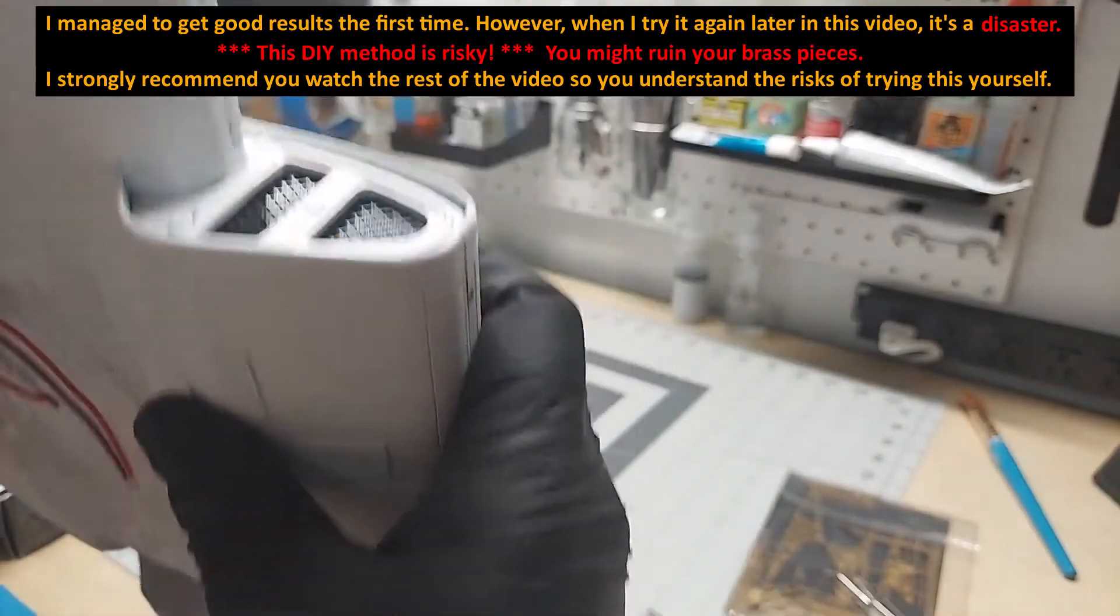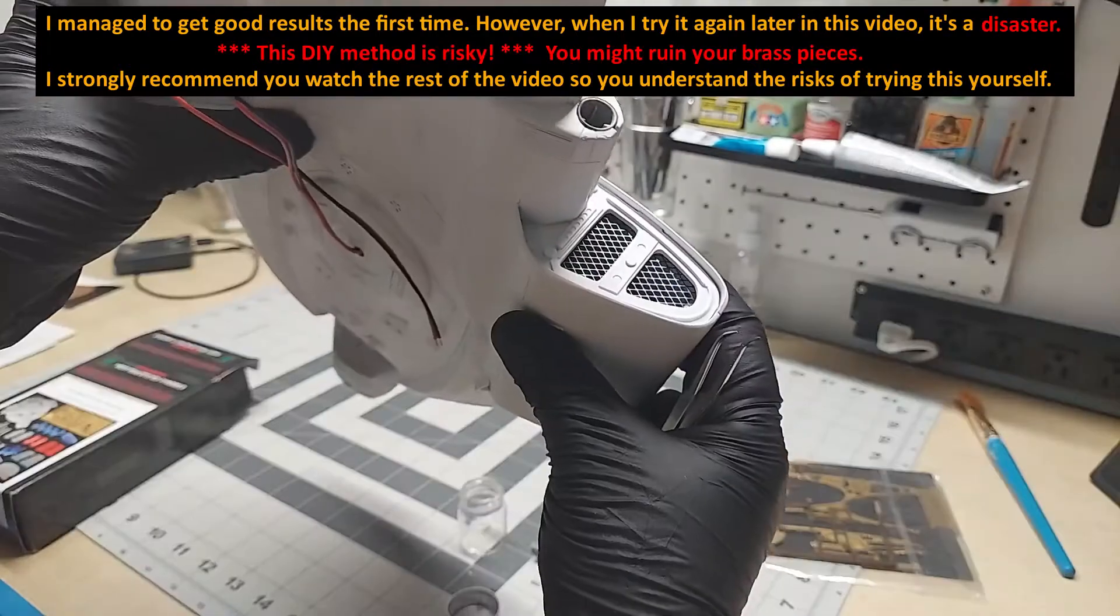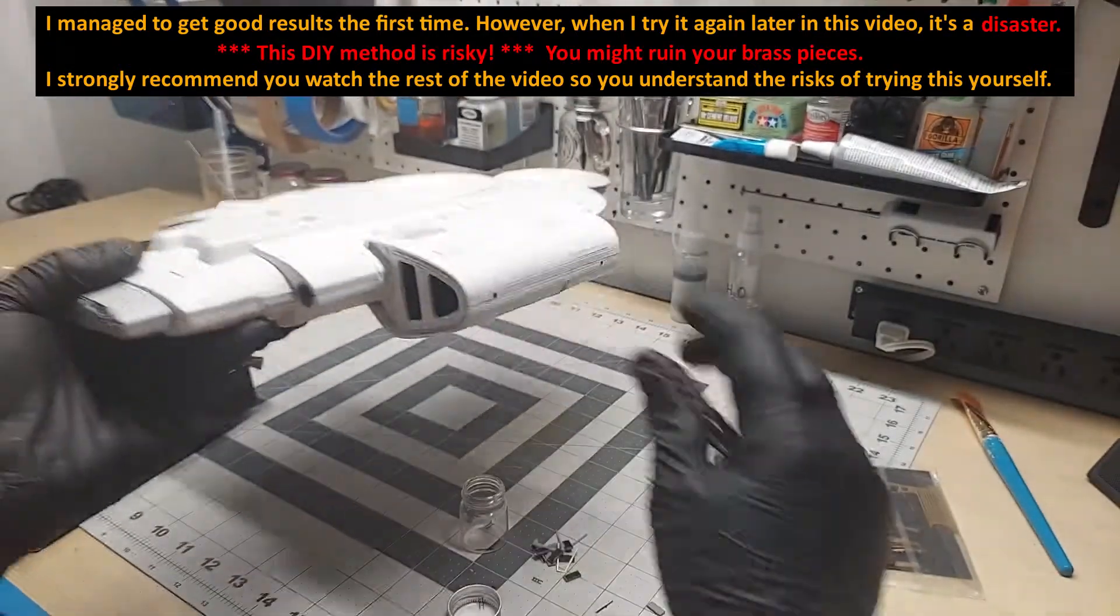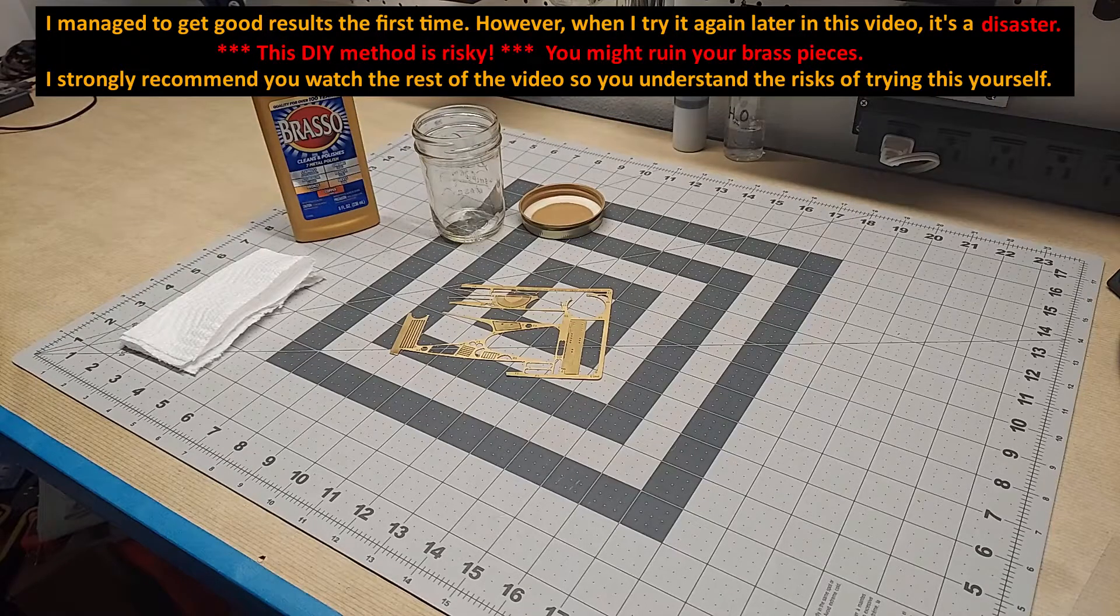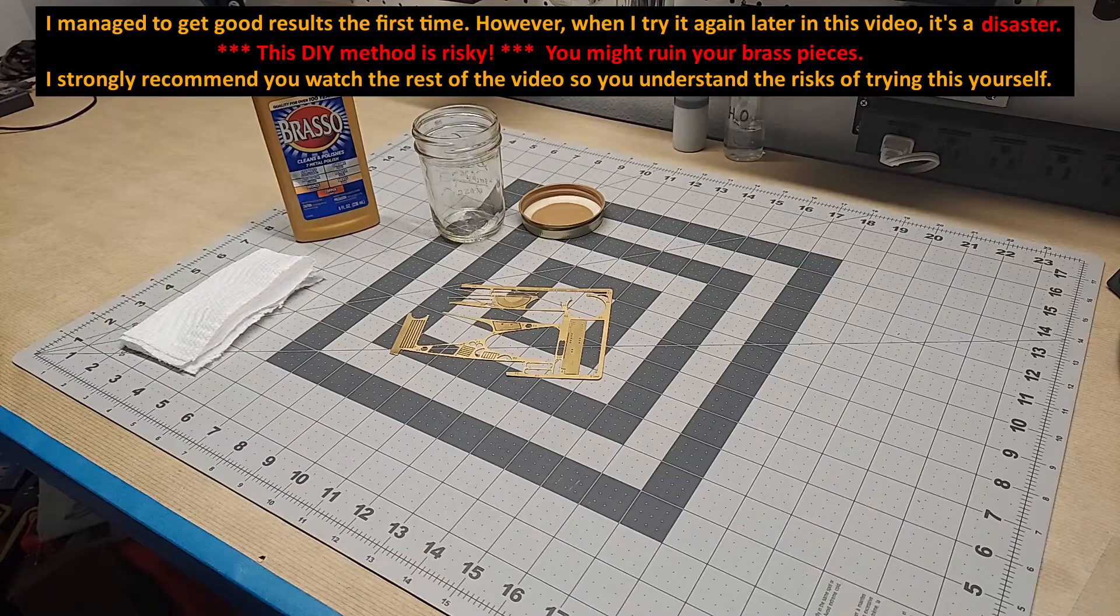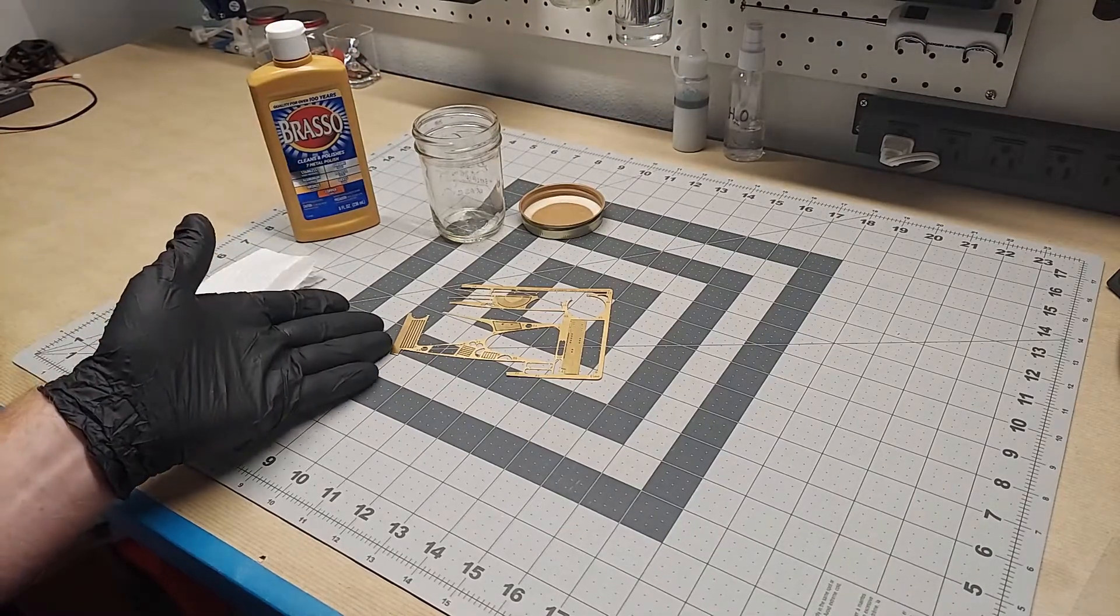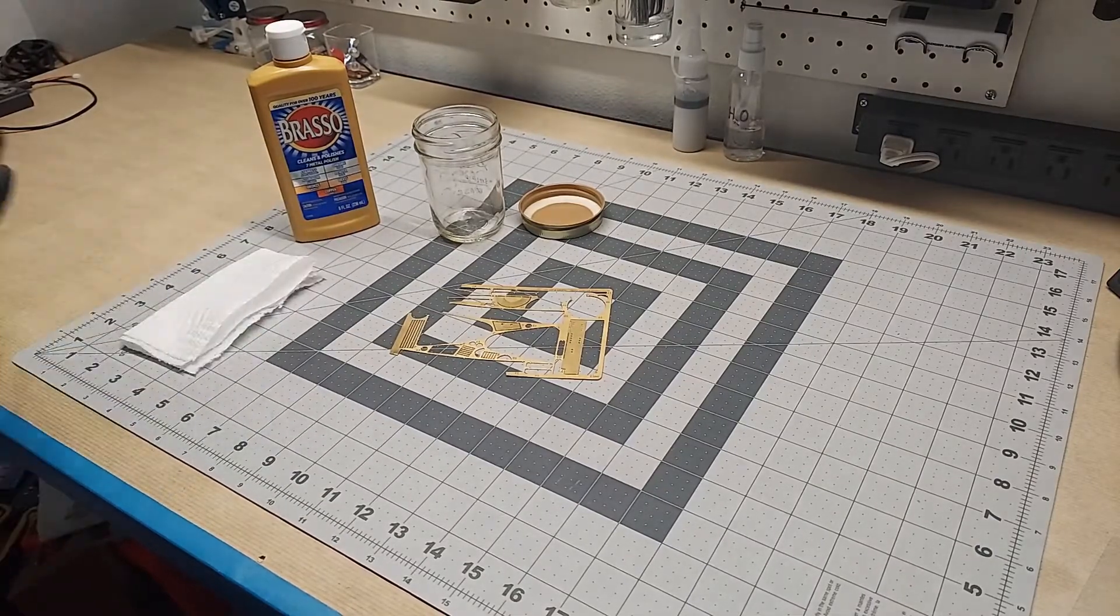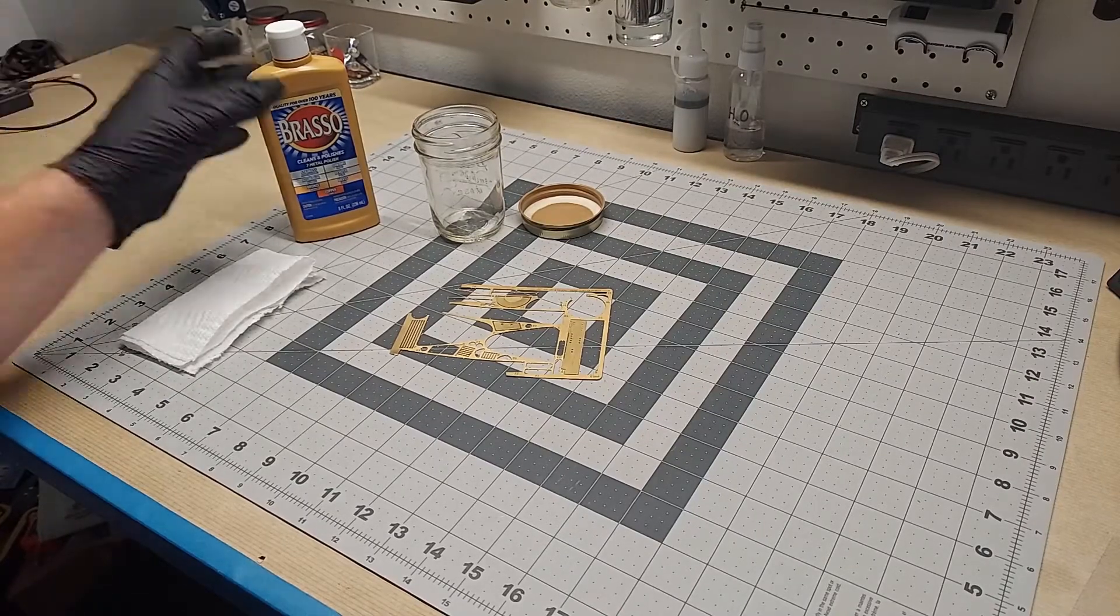Once I figured out the process of suspending the parts over the surface of the Brasso paste, it gave it a nice dark color. I didn't take any video or photographs of the process of blackening the photo etch components for my Defiant, so I thought I would show you the process with some scraps and parts I'm not going to use.